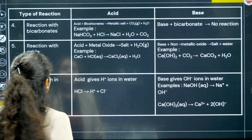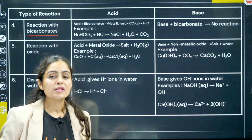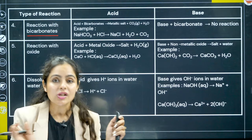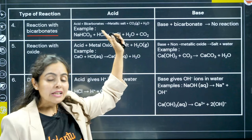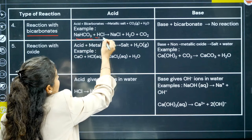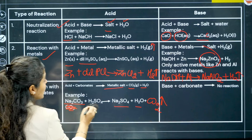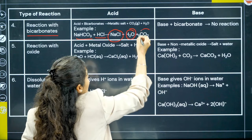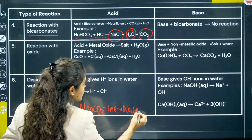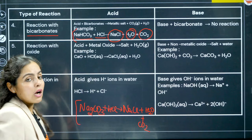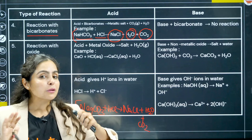Reaction with bicarbonates follows the same pattern. Metal bicarbonates are also basic in nature, so they react with acids — not bases — giving metallic salt, carbon dioxide, and water. For example, sodium bicarbonate reacting with HCl gives NaCl + water + CO2. The only difference between the carbonate and bicarbonate reactions is the balancing; the products are the same.